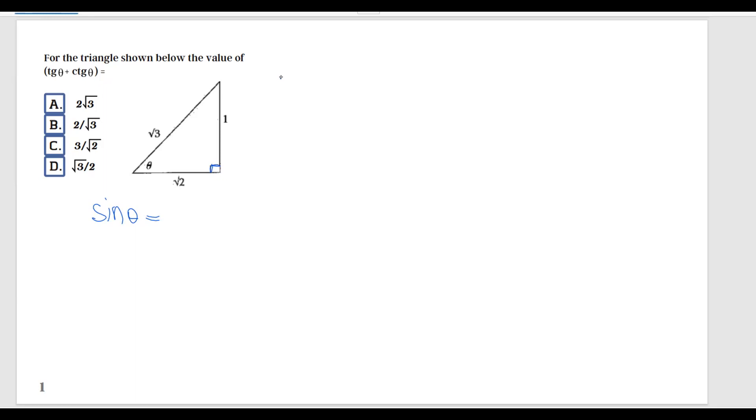The general rule for sine says that sine equals the opposite over hypotenuse. In our case, it's the opposite of this angle theta, which is 1, divided by hypotenuse, in our case is square root of 3. Now let's go to cosine as well of theta equals...